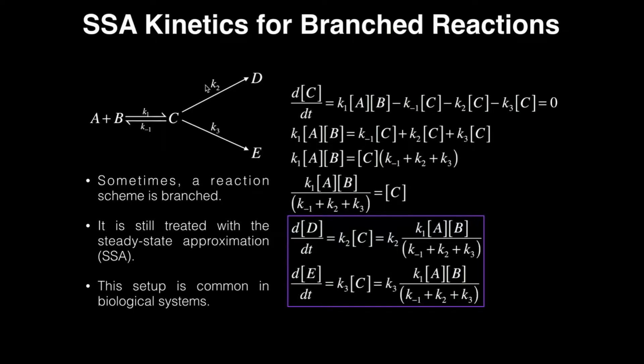But like any steady state approximation problem, we need to develop the rate law for the intermediate, which in this case is obviously C. So what we do is we define the rate of change of the concentration of C with respect to time, dC/dt. And what does that equal to?